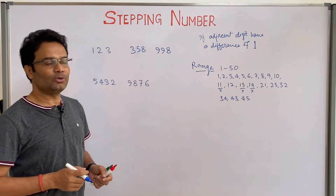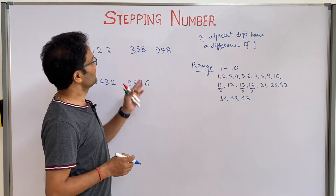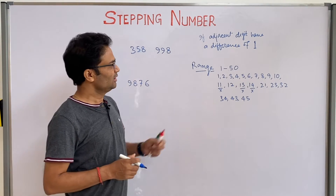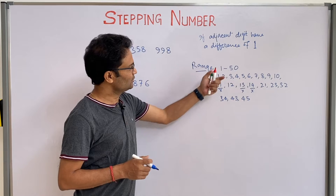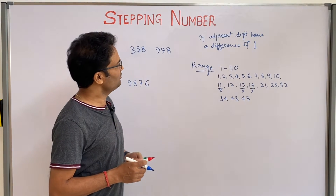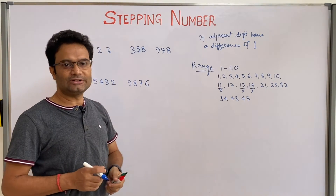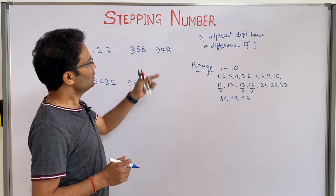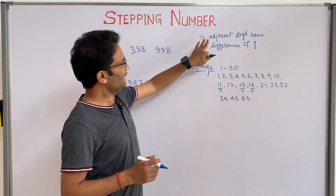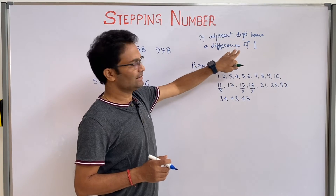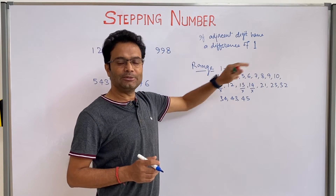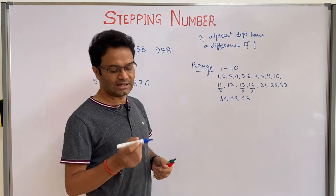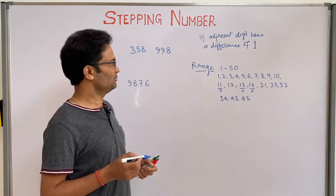In this video we are going to generate some stepping numbers between a given range. But before that we should understand what a stepping number is. Any adjacent digits that have a difference of 1 — those are stepping numbers.